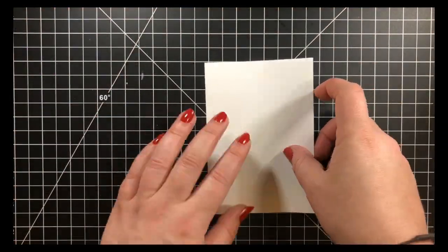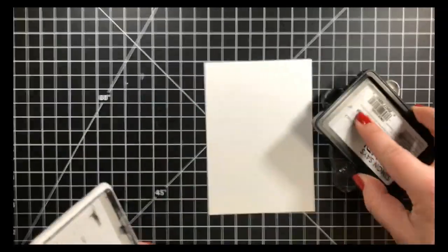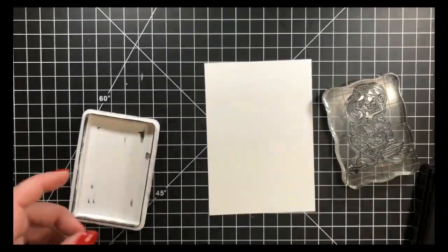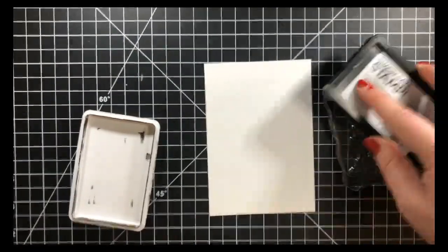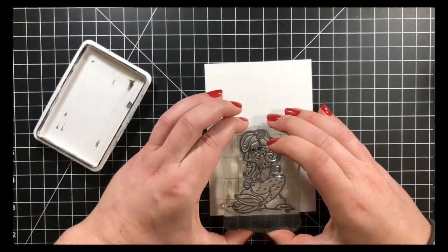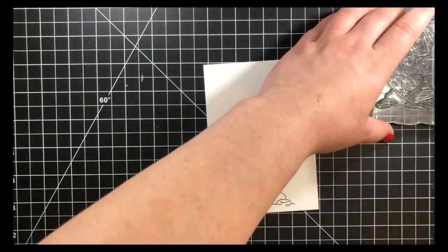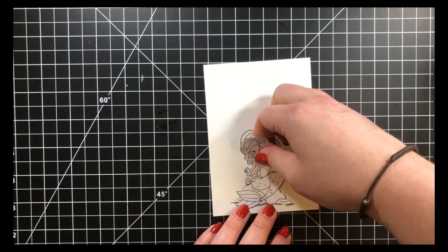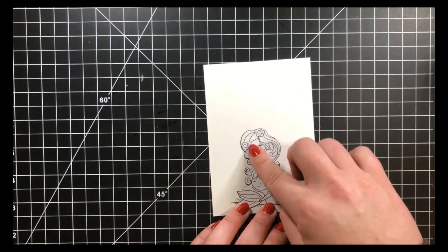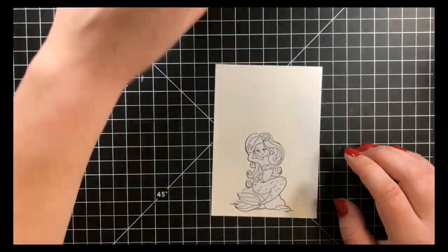So we are starting off with a piece of Neenah Solar White. This is 5 1/2 by 3 3/4 and I'm stamping my little mermaid here with Simon Says Stamp Intense Black ink because I will be Copic coloring her. Stamped her towards the bottom of the panel and I'm masking her out with Eclipse masking paper. I didn't bother to cut the little squiggly lines from her hair. I figured I'll just fix those up later.